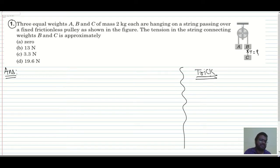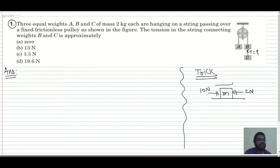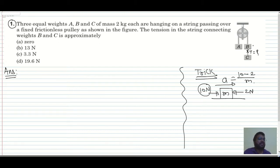Suppose this is an object of mass m and I apply a force of 10 N from one direction and 2 N from the other direction. The acceleration will always be in the direction of the greater force. So acceleration = (greater force − smaller force) / total mass of the system. We can apply this same formula here.